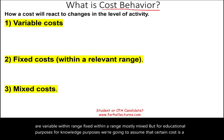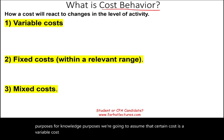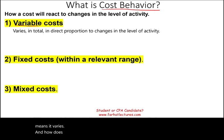What is a variable cost? From the word variable, it means it varies — and how does it vary? It varies in total and in direct proportion to changes in the level of activity.